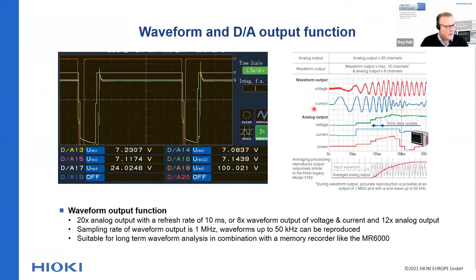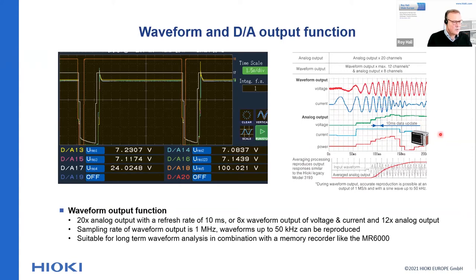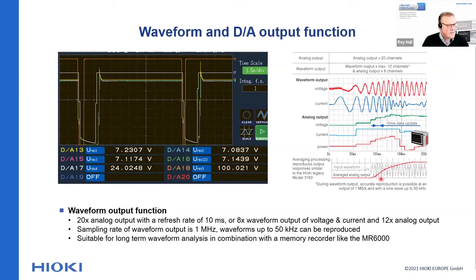The waveform output can be combined with an analog output, which is essentially a trend of the measured RMS values. The update interval is the same as the display update interval, at a minimum of 10 milliseconds. When you are interested in long-term characteristics of your system, you can connect these signals to a high-performance memory recorder such as the Hioki MR6000, enabling long-term saving of voltage and current values and waveforms for later analysis.